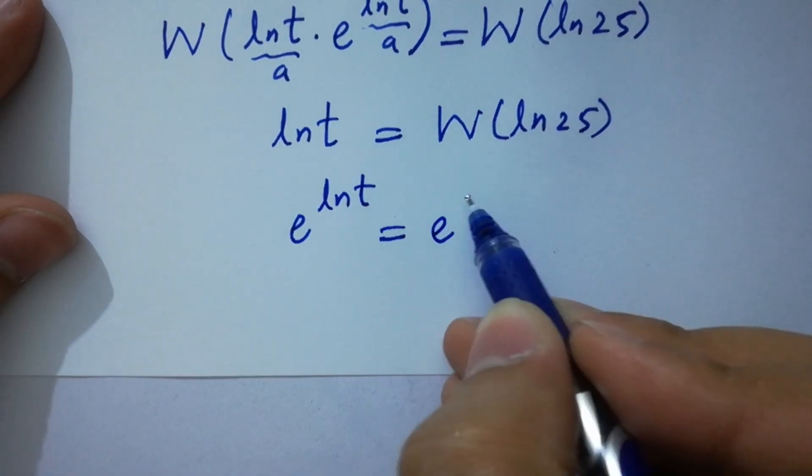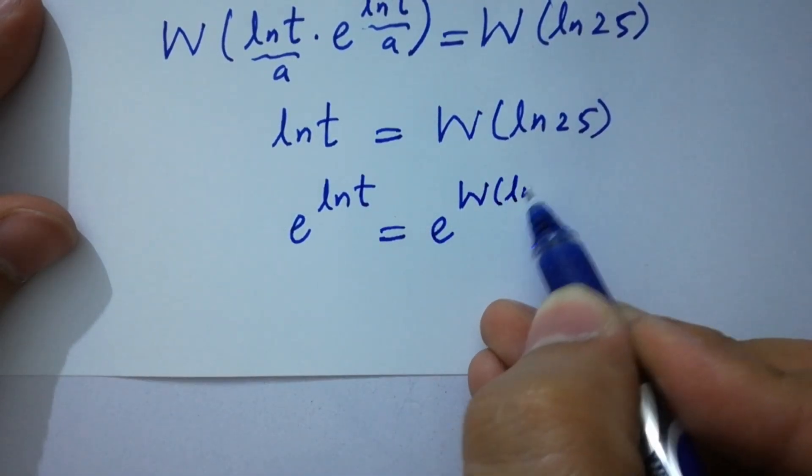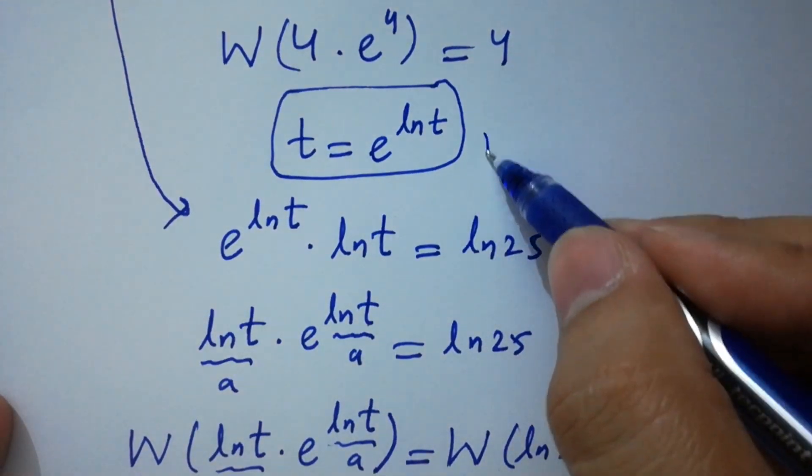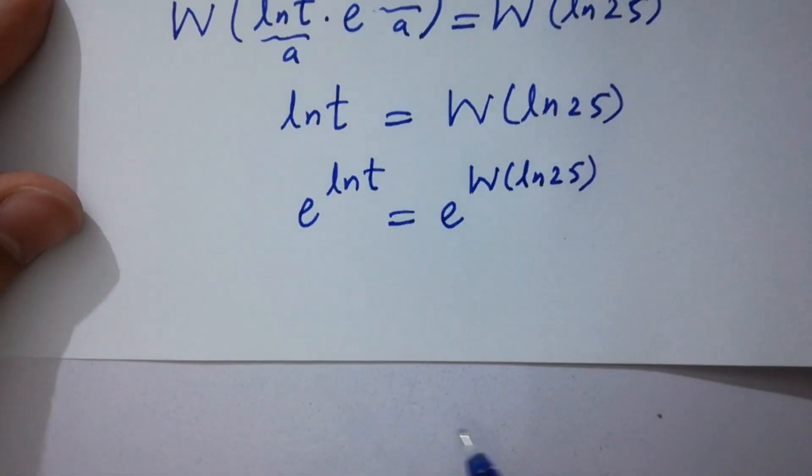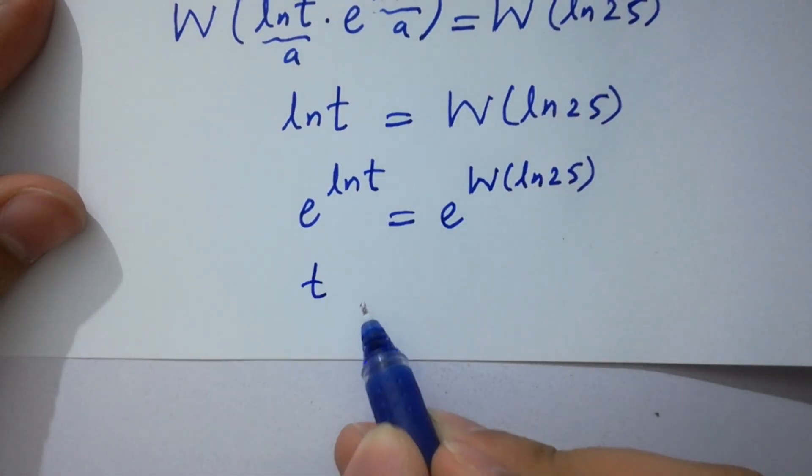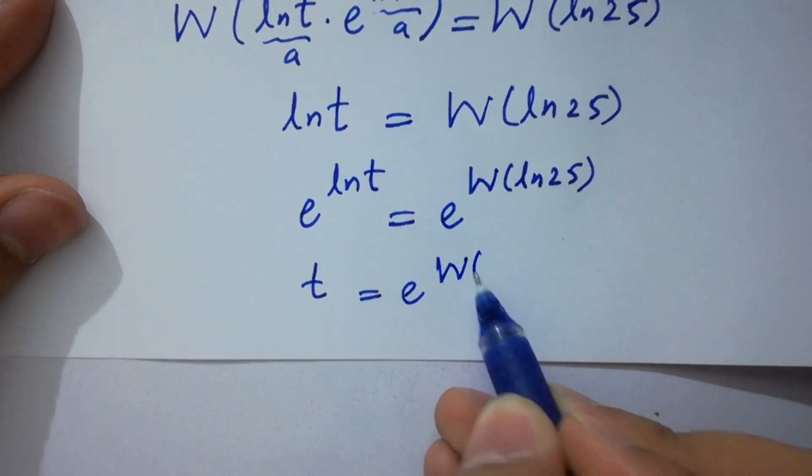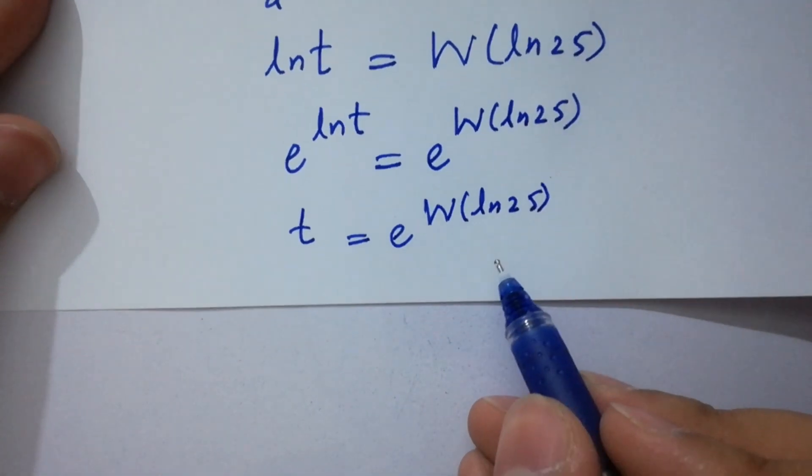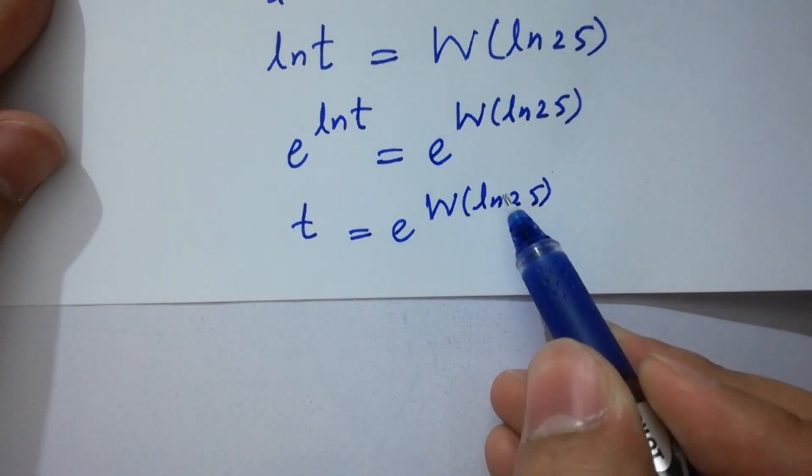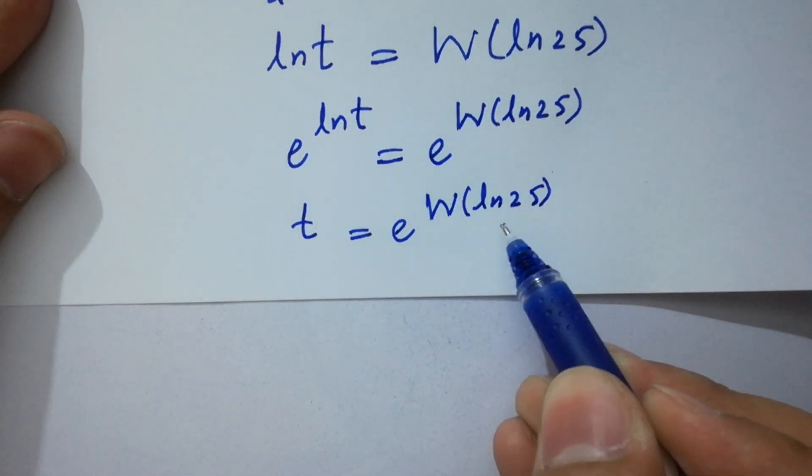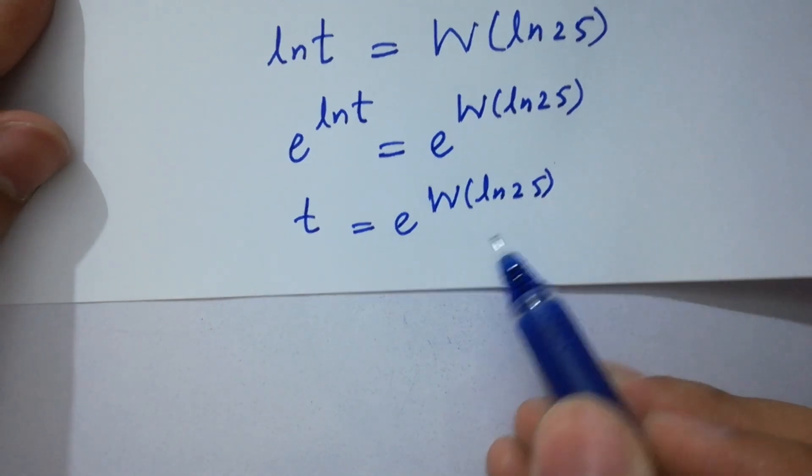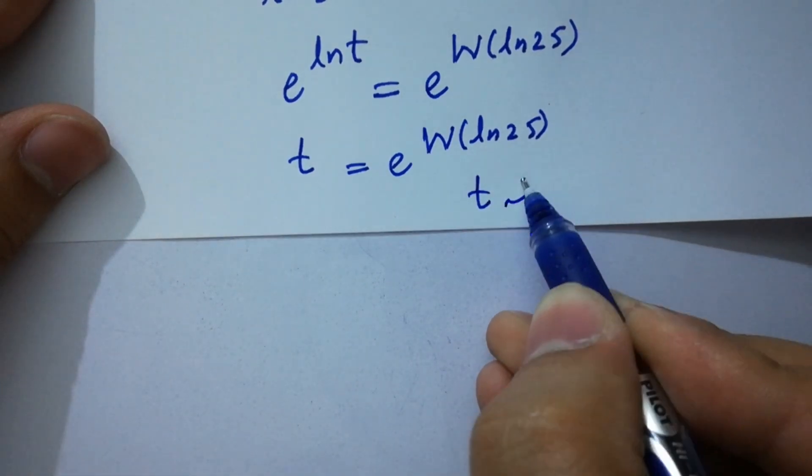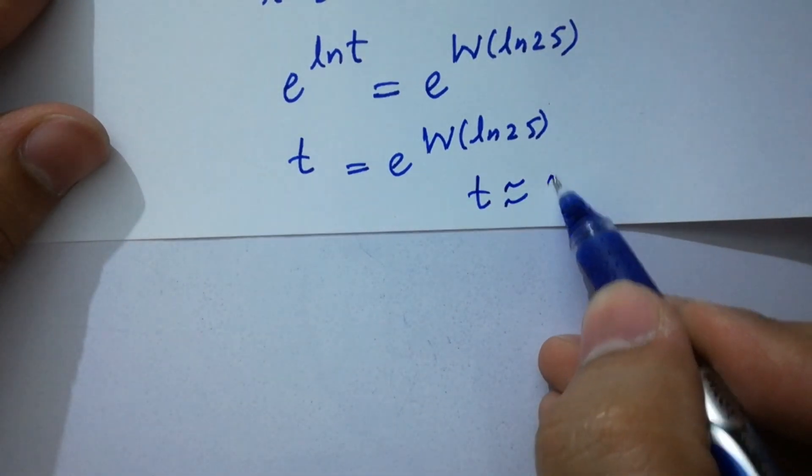Here, you can see ln t is equal to W of ln 25. So, it will be t equal to e to the power W of ln 25. So, we have the value of t which is approximately equal to 2.963.